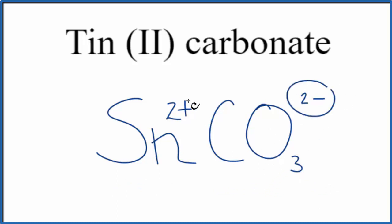These charges need to balance. We need to have a net charge of zero. 2+, 2-, the net charge is zero. So this is the formula for tin (II) carbonate: SnCO3.